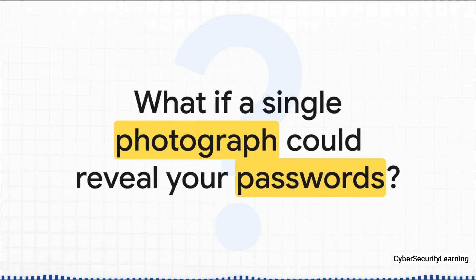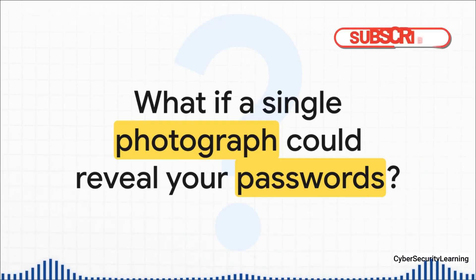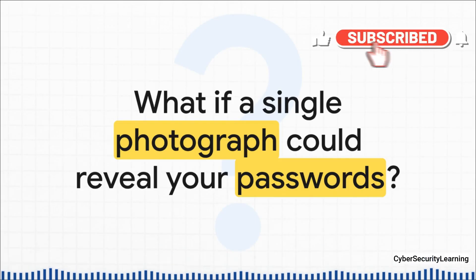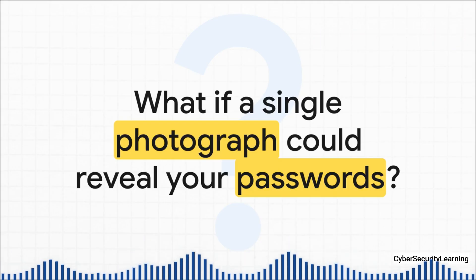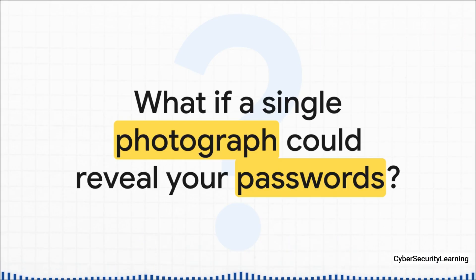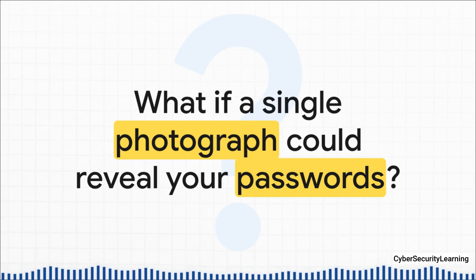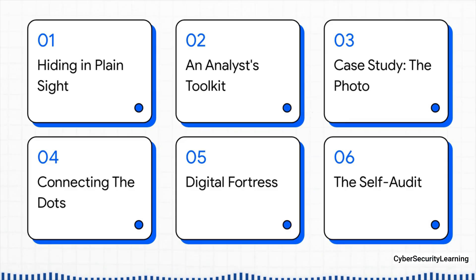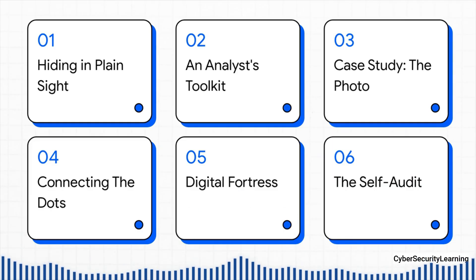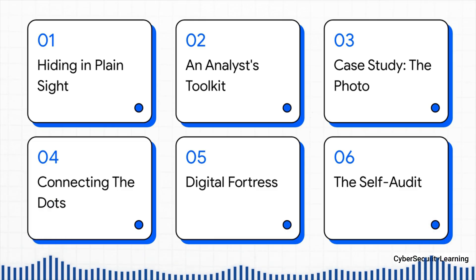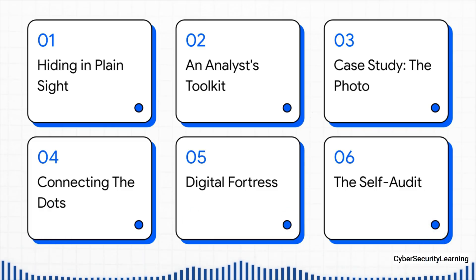It's not only possible — we're actually going to walk through exactly how it's done. You're about to see how one single, totally innocent-looking photo can become the key to unlocking a person's entire digital life. We'll kick things off with what OSINT really is, check out an analyst toolkit, dive into a wild case study starting from just a photo, and then get into how you can protect yourself and run your own self-audit.